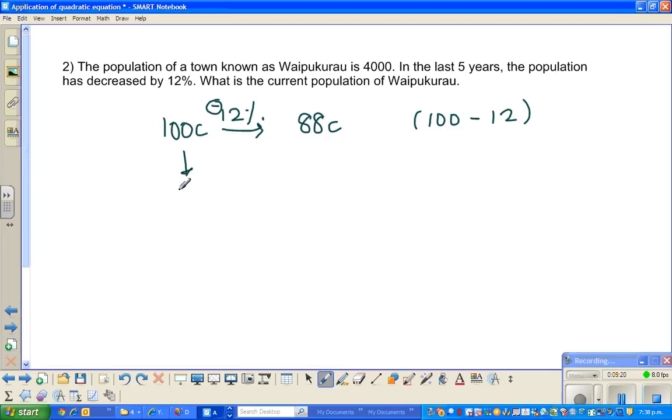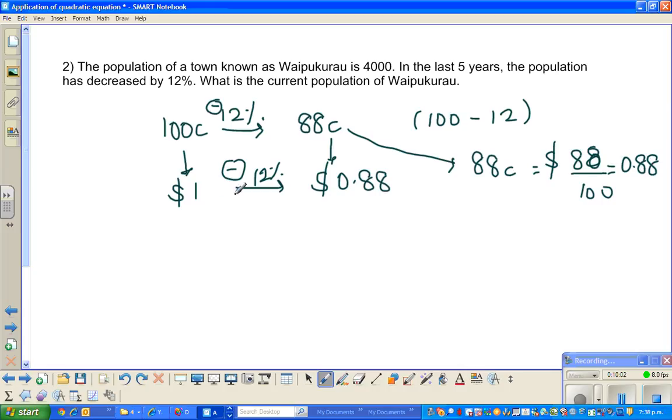The same thing, if you write: $1 when reduced by 12% will be 0.88 dollars. Those who don't understand how I got from here - this is just 88 cents is 88 out of 100 dollars. 88 out of 100 is 0.88. Now listen to my argument.